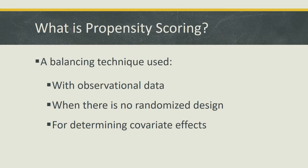So what exactly is propensity scoring? It's a balancing technique used with observational studies. These types of studies are non-randomized and may show great differences in characteristics between treatment and controls, which could create partial results. It's also used when there's no randomized design — under non-randomized conditions, it can be used to produce equal comparisons.